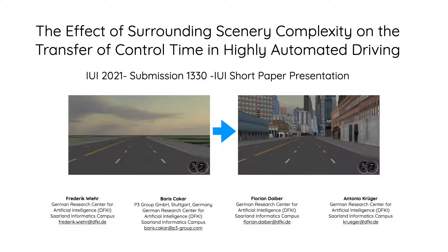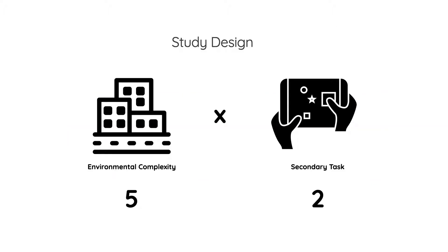The effect of environmental complexity on the time of transfer of control in highly automated driving. Our study design was a 2 by 5 factorial within-subjects design. We tested 5 levels of environmental complexity according to our definition in the paper. We had two driving tasks: one with a secondary task and one without. The transfer of control time was measured as the dependent variable.